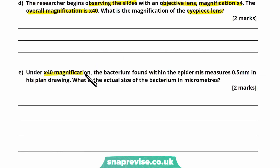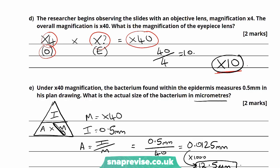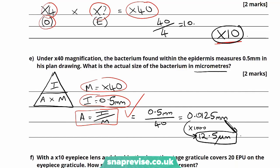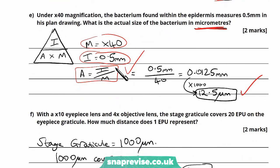Part E says: under times 40 magnification, the bacterium found within the epidermis measures 0.5 mm in the planned drawing. What is the actual size of the bacterium in micrometers? This requires the formula triangle. I always write the triangle out first — I over AM, where I is image size, A is actual size, and M is magnification. I know magnification is times 40 and image size is 0.5 mm, so actual size equals I over M, which is 0.5 divided by 40 = 0.0125 mm. Multiplying by 1000 gives 12.5 micrometers. Show your working — you can still gain one mark if the final answer is wrong.